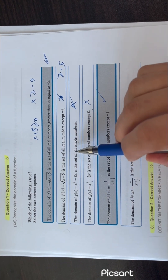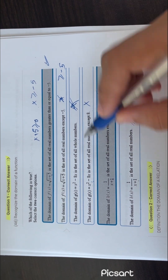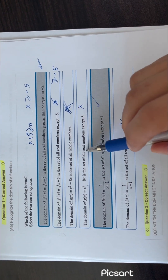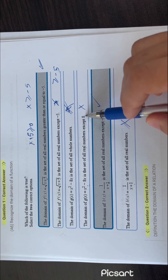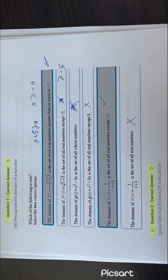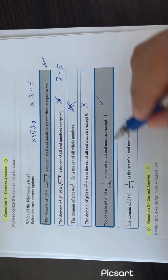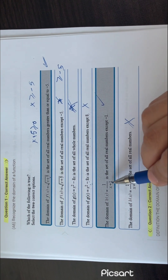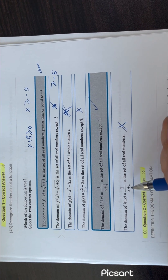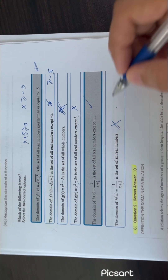If this one is the set of all whole numbers — no, it's the set of all real numbers, because even if you have a fraction this will work. The set of all real numbers except 8 — no, because 8 also will have a defined number in the range. The set of all real numbers except minus 1 — this is correct because minus 1 will give you 0 in the denominator, so this will be undefined. And this one — the set of all real numbers — is wrong; it should be except minus 1.